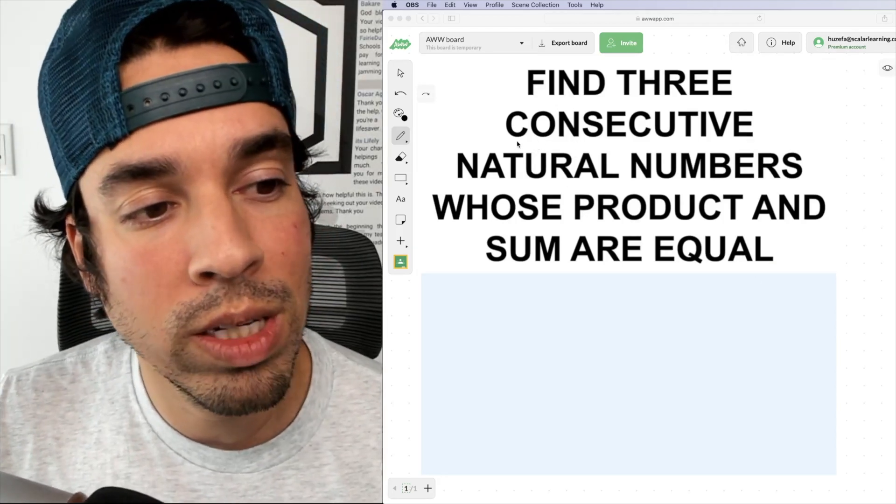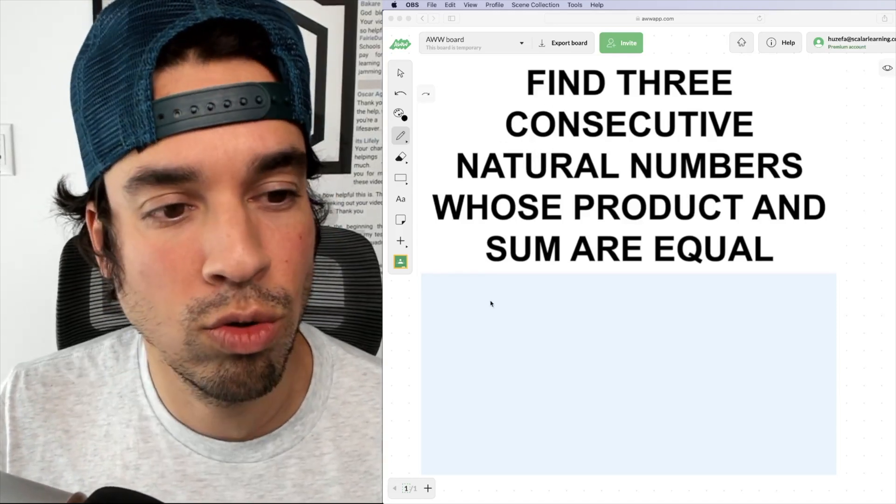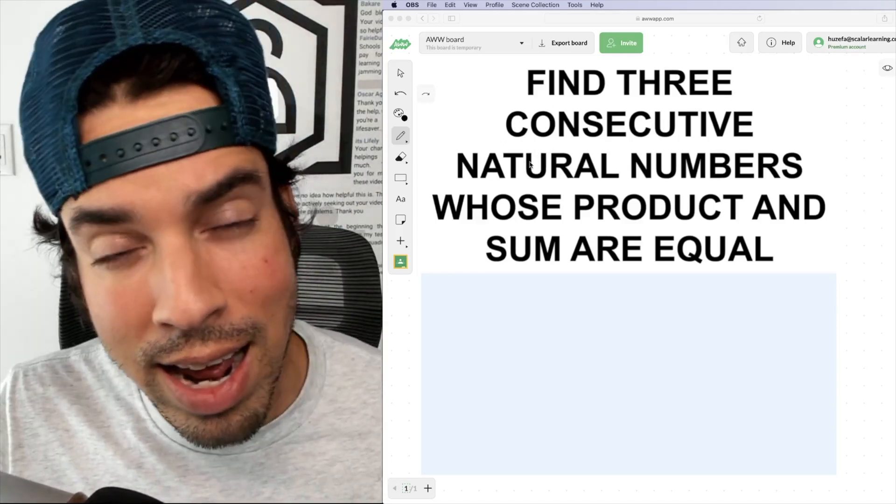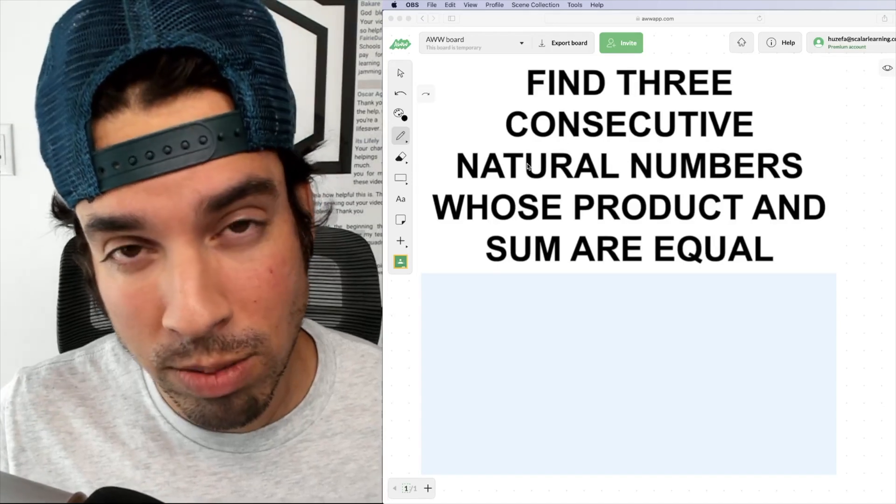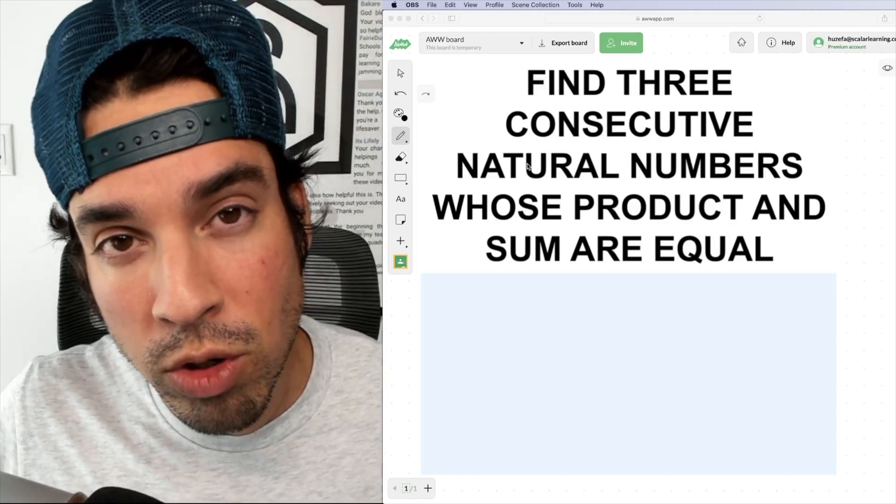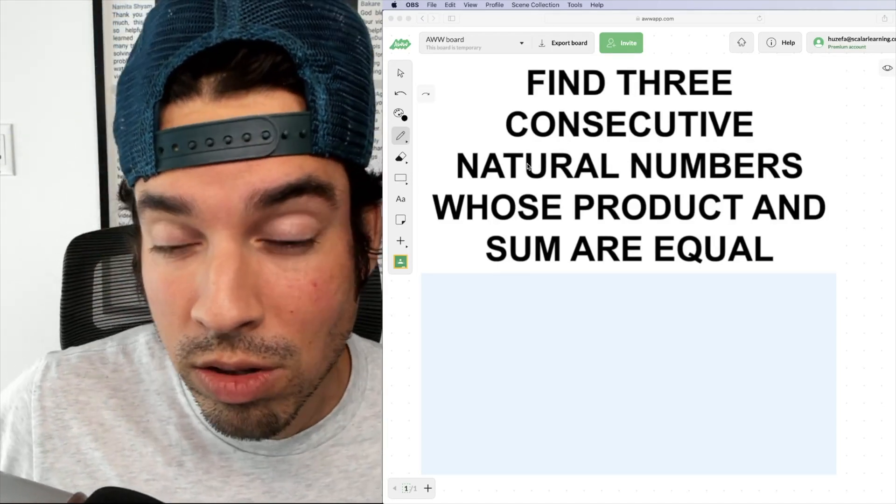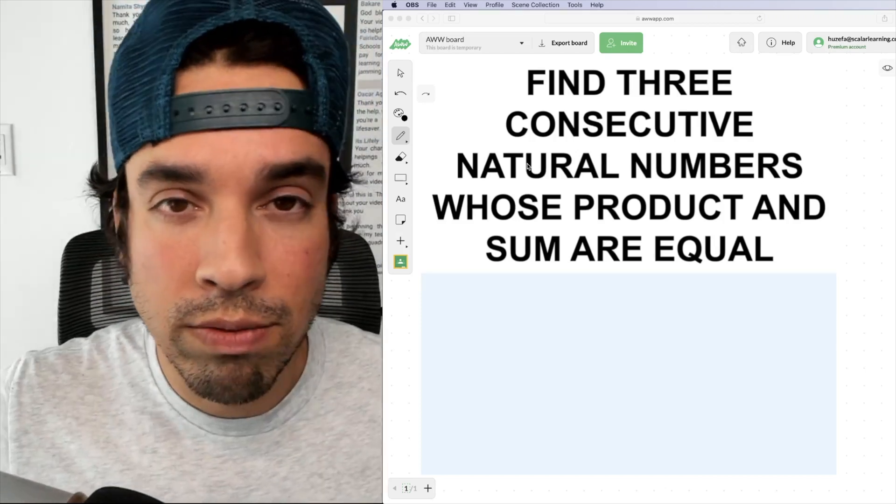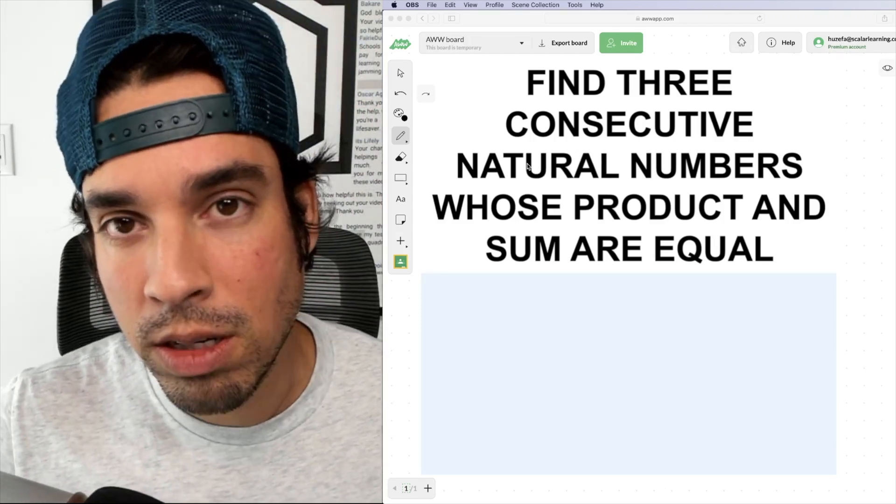So first of all, we need to understand what does that word consecutive mean? That means next to one another. So when we're talking about natural numbers, and by the way, what are natural numbers? Natural numbers are whole numbers that are positive and greater than zero. So three, four, five, six, seven, eight, a hundred, a million, a billion, et cetera.